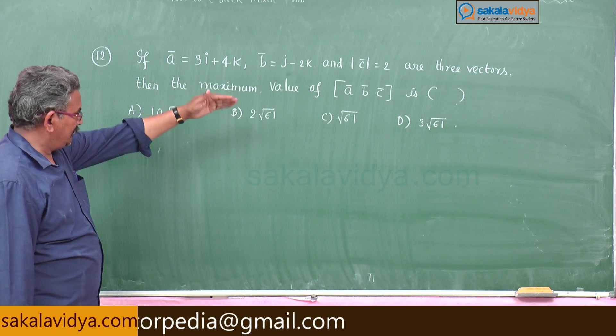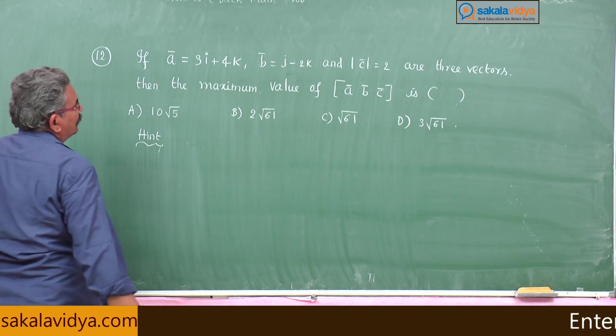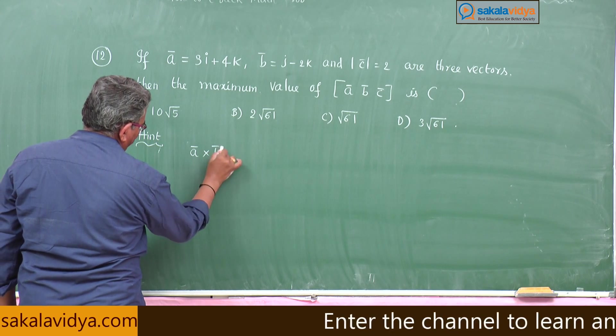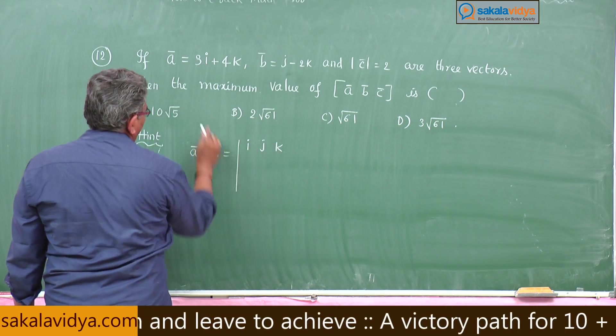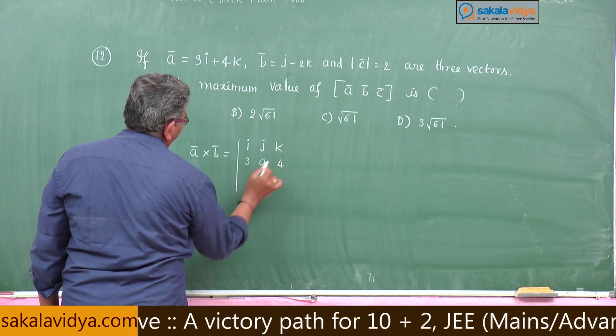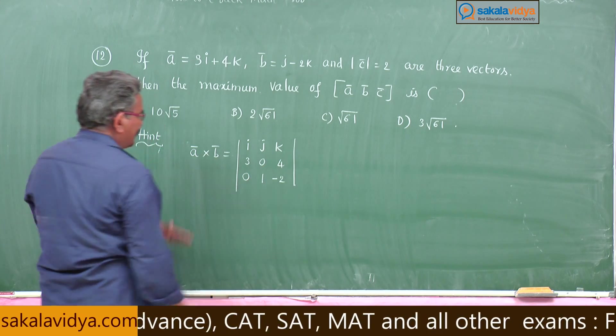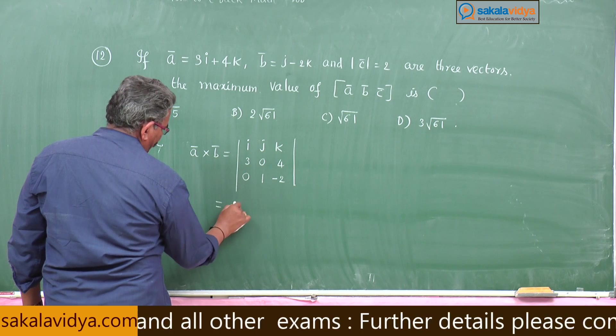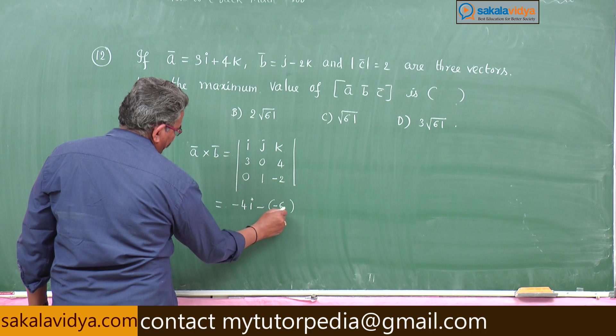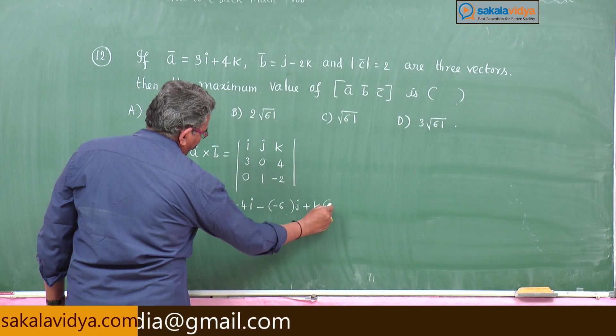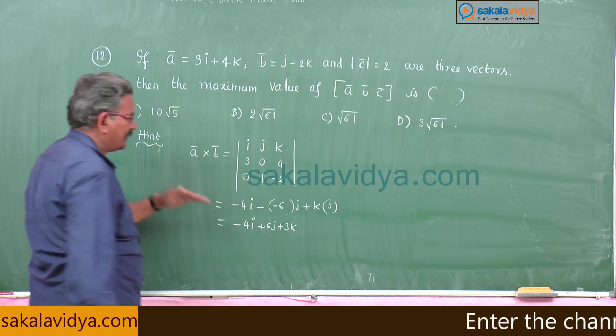The maximum value of box a, b, c. First you find out a cross b. A cross b means determinant of i, j, k; i component 3, 0, 4; here 0, j is 1, -2. Let us expand it. This is -4i and minus of minus 6j plus k of 3. This becomes -4i + 6j + 3k, this will be mod of a cross b.